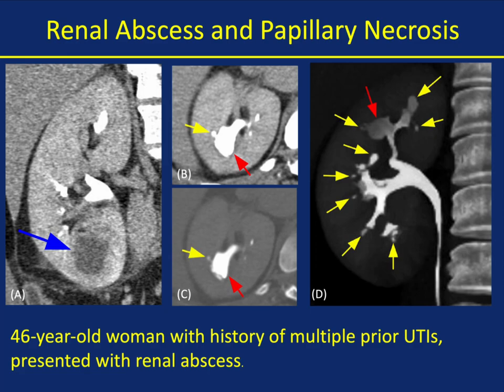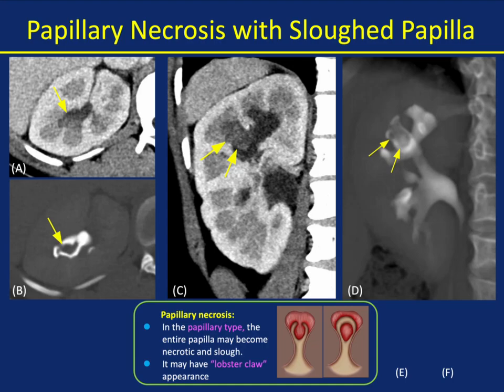Here's a patient with a history of prior UTIs who presented with a renal abscess, but you can see multiple areas of papillary necrosis involving multiple calyces. Wide windows allow you to see it, and the MIP imaging is particularly good. You also see irregularity and narrowing of the upper pole calyx. You have to be careful — sometimes papillary necrosis can look in many ways similar to an infiltrating transitional cell carcinoma. Another case of papillary necrosis with a sloughed papilla — this is that lobster claw appearance, very nicely shown on the MIP imaging, where the entire papilla is worn away.